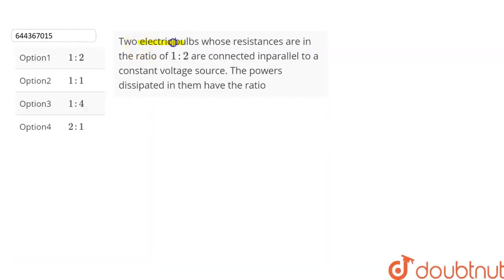The question is: two electric bulbs whose resistances are in the ratio 1:2 are connected in parallel to a constant voltage source. We have to find the ratio of power dissipated in both of them.